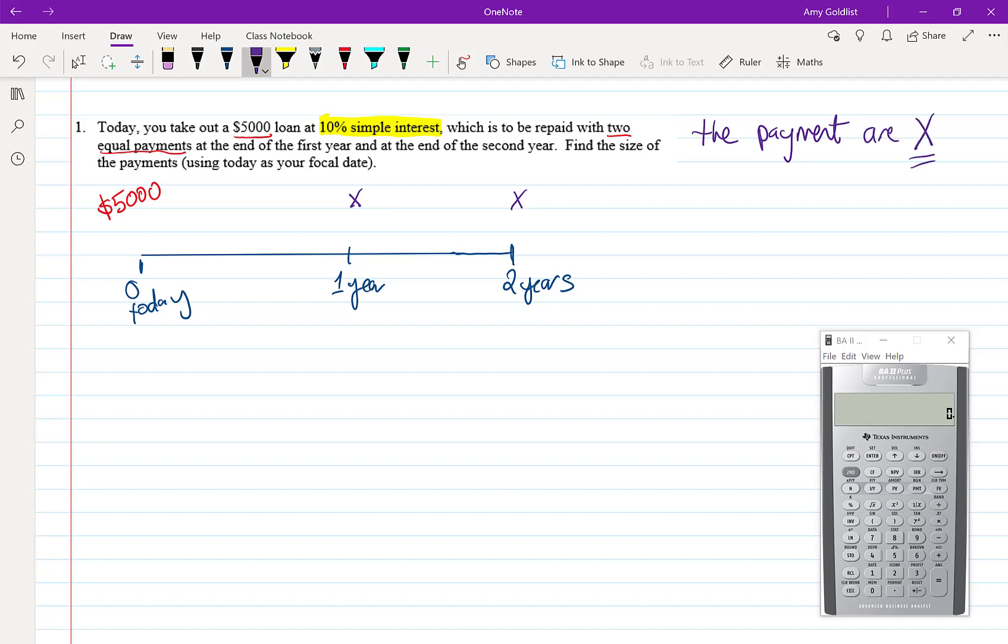And that's because I have to choose any kind of variable and I choose the letter X. That's often what we do. It says use today as your focal date. So I'm going to go ahead and circle that.